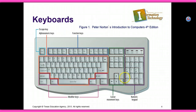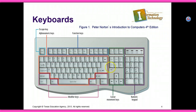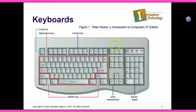On a keyboard, you have your escape key in light blue. The alphanumeric keys are in red and these are used for typing. Function keys are your F1 through F12 keys. Your cursor movement keys are over here between your alphanumeric and your numeric keypad. And then your modifier keys are your shift, control, and alt.